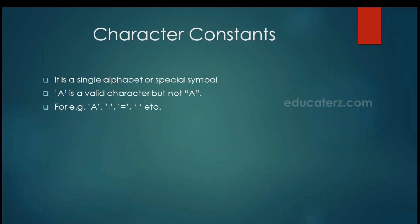Next we have character constants. A character constant is a single alphabet or special symbol, and this value should be enclosed in single quotes. For example, 'a' with single quotes is a valid character constant, but we cannot use double quotes for a character constant.